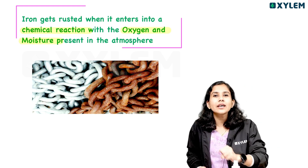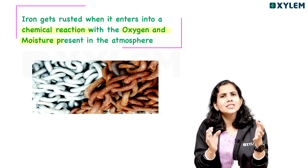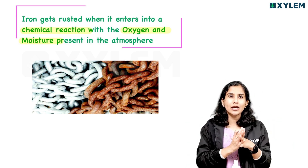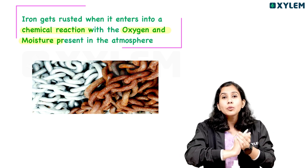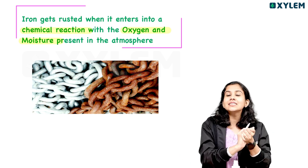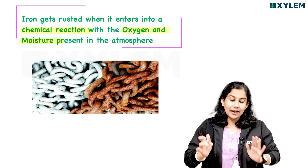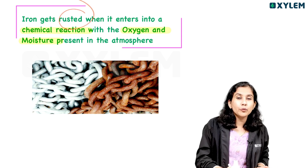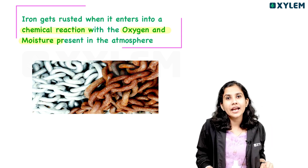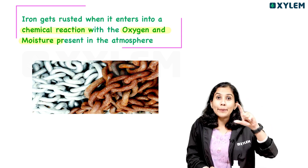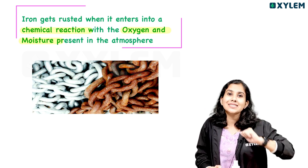In the atmosphere, there is oxygen and moisture. Moisture means water content. This is a chemical reaction where iron reacts. The result is a chemical change, and rust forms on the surface of the iron.